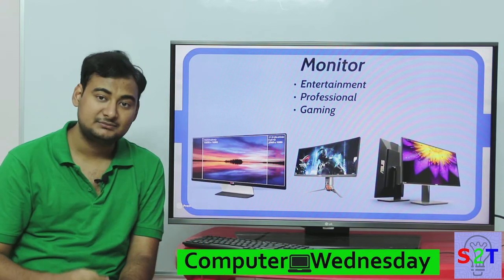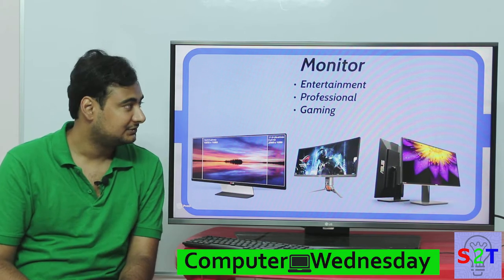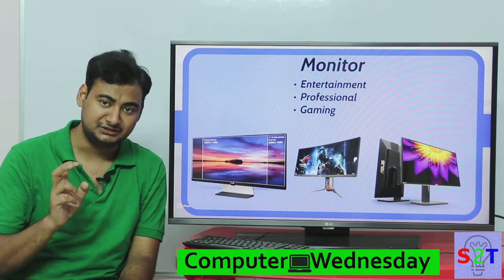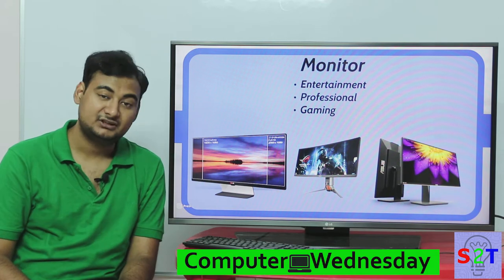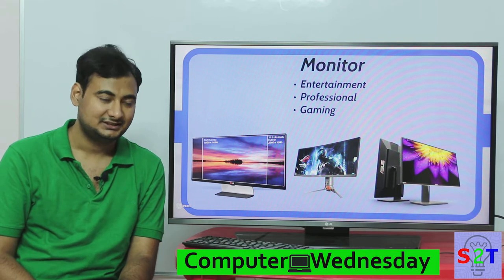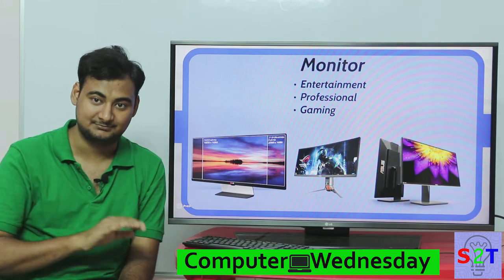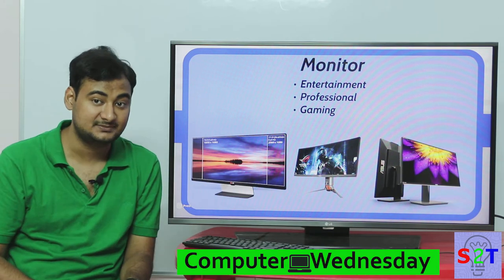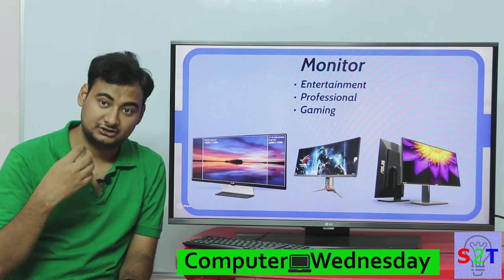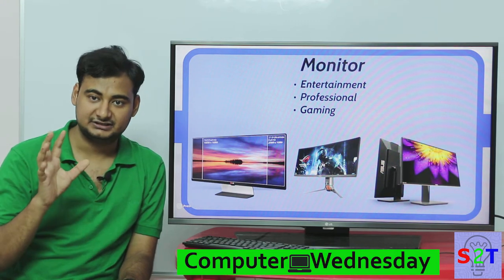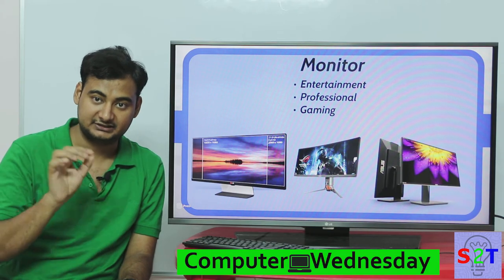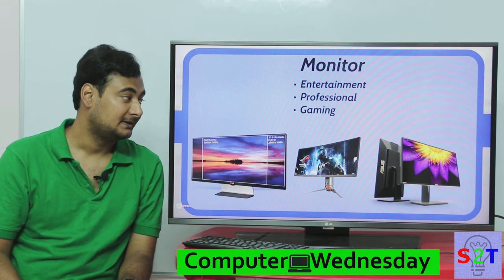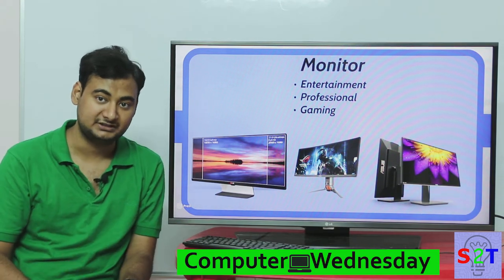For monitors, there are three main categories. Normal entertainment monitors are basic and inexpensive, though ultrawide 21:9 monitors are great for movie watching with no black bars. Professional monitors offer excellent color accuracy and reproduction, and typically include VESA mounts so you can adjust height or use your own stand — important since professionals may stare at their screen for 10 to 12 hours a day.